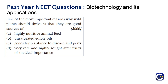Next question: one of the most important reasons why wild plants should thrive is that they are good sources of — analyzing the statements: highly nutritive animal feed — wrong; unsaturated edible oils — wrong; genes for resistance to disease and pest — yes. People exposed to a lot of pollution eventually become resistant as their genes accustom to those conditions.